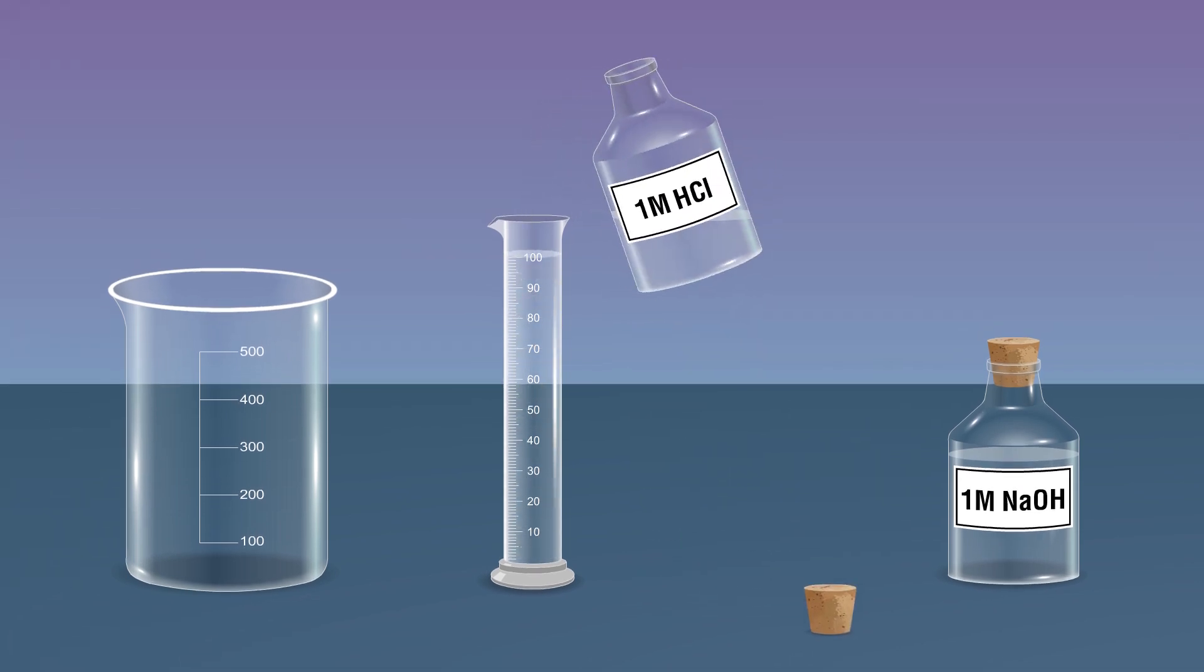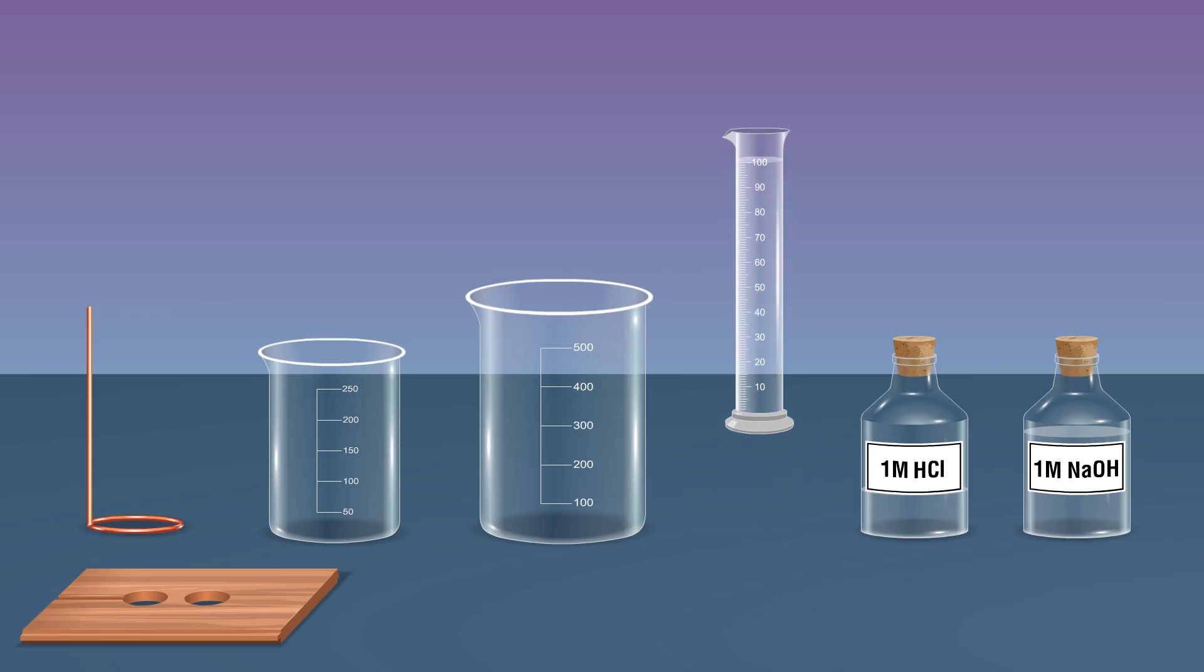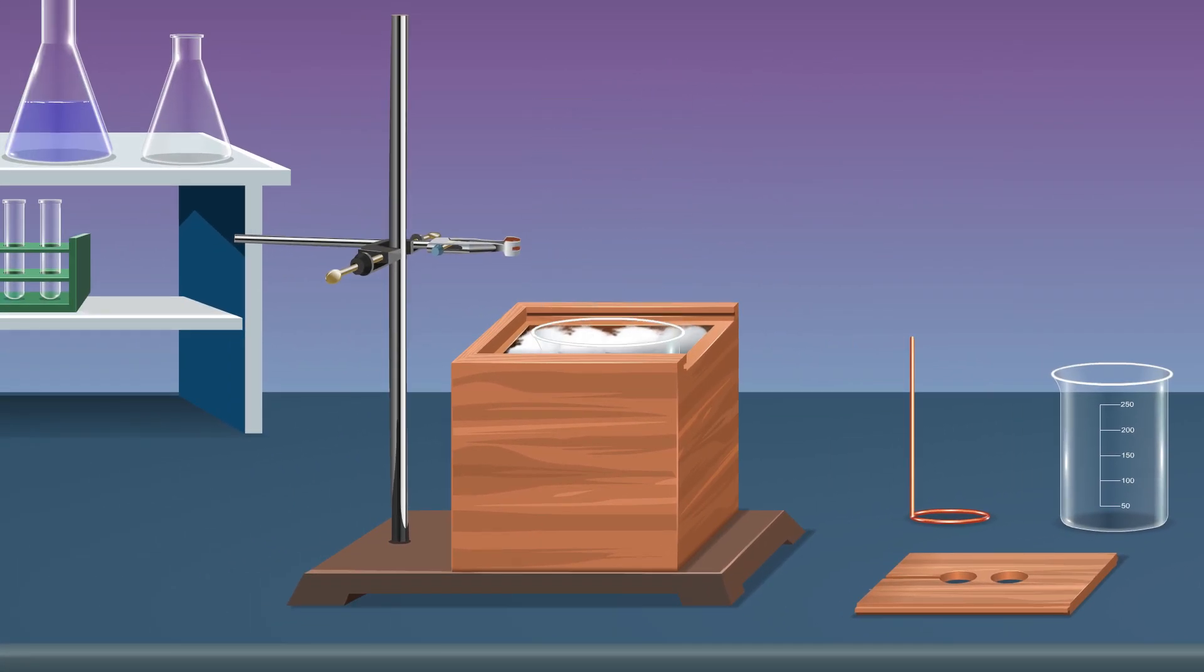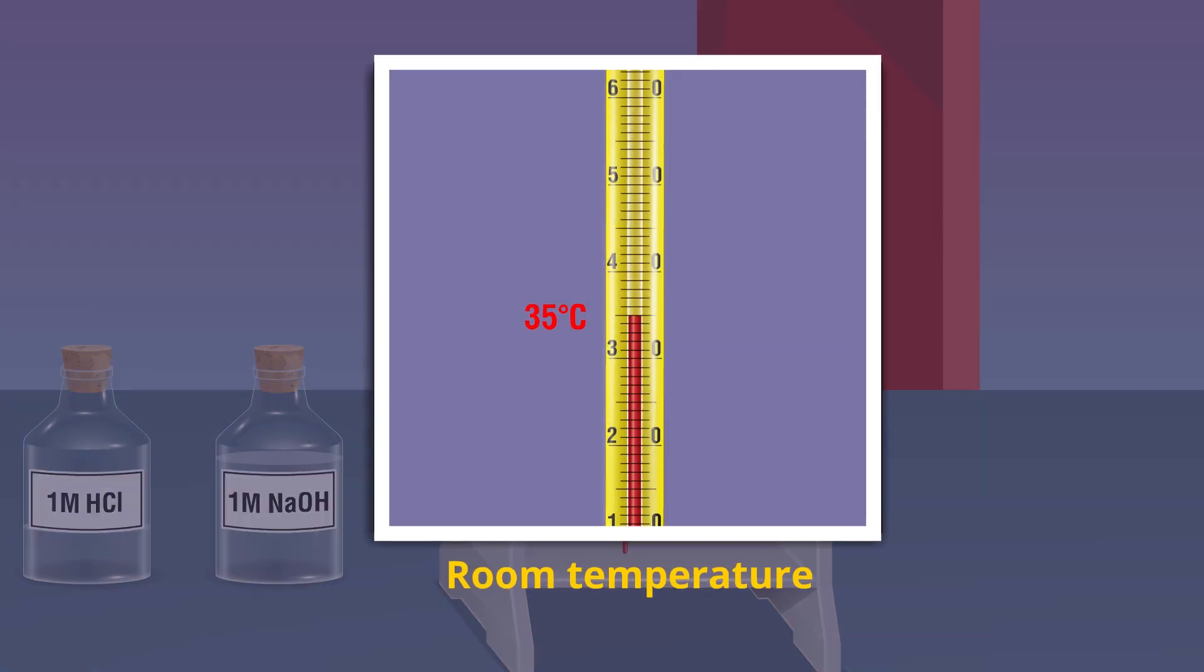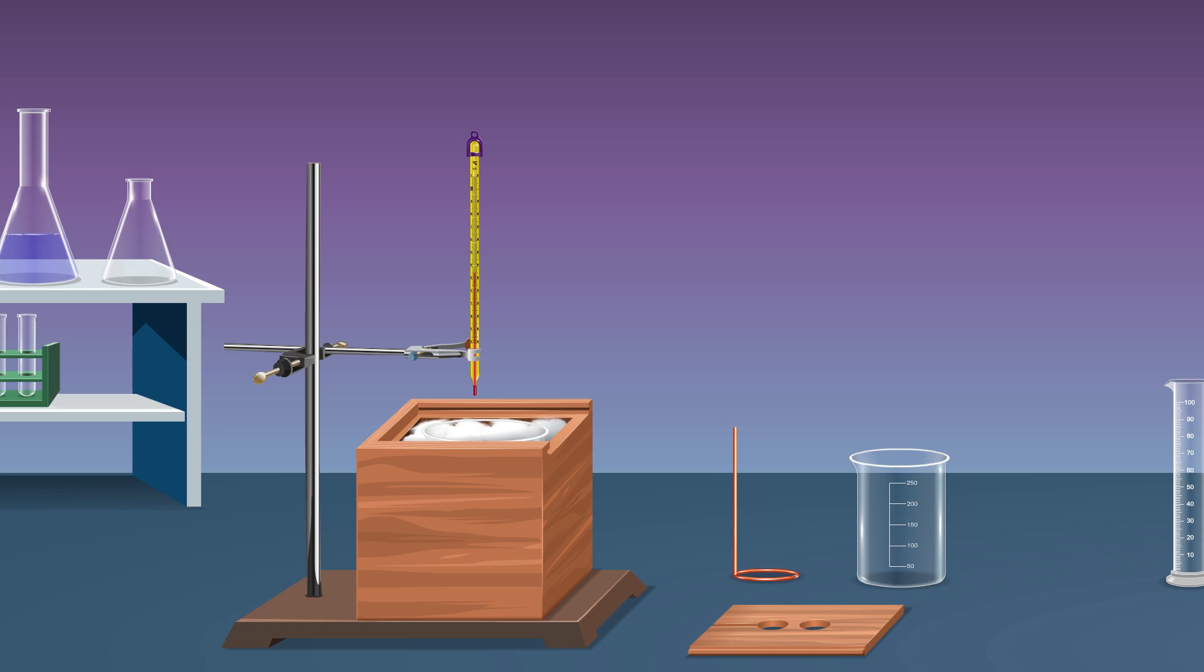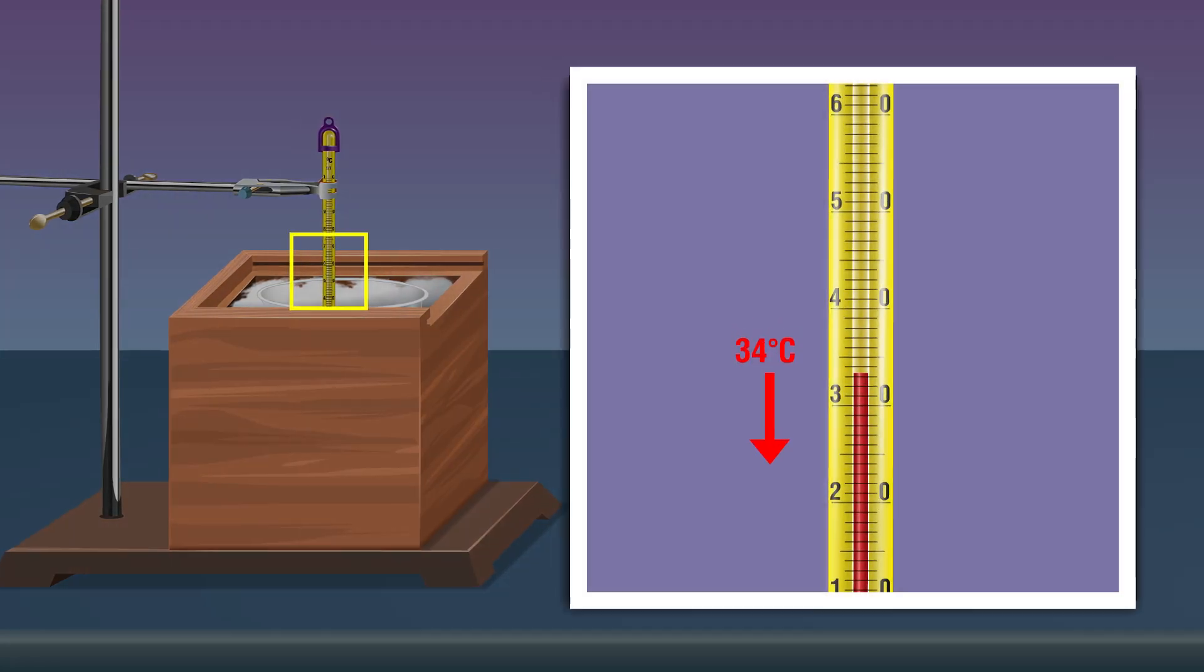Transfer 100 milliliters of 1 molar hydrochloric acid into the beaker using the measuring cylinder. Place the hydrochloric acid solution into the calorimeter. Measure the initial temperature of the hydrochloric acid and record the data as T1 degrees Celsius.